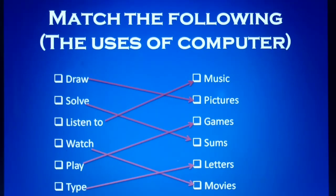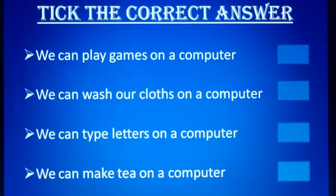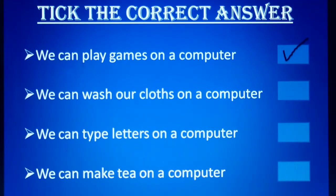Now let's move to our second activity, which is tick the correct answer. Here we can see four sentences. Some sentences are correct and some are incorrect. So we have to find out the correct sentence and tick it, and for the wrong one we have to cross. The first sentence is: we can play games on a computer. Yes, of course we can play games on a computer — it is a correct statement, so we have to tick on it.